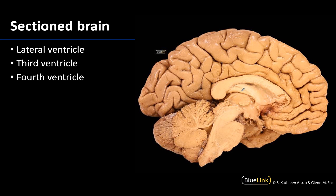Recall that the lateral ventricles are located within the cerebral hemisphere. If you were to poke a hole through this region and go into the cerebral space, you would be in the left lateral ventricle. So that's where the lateral ventricles are going to be located — think in the cerebrum.